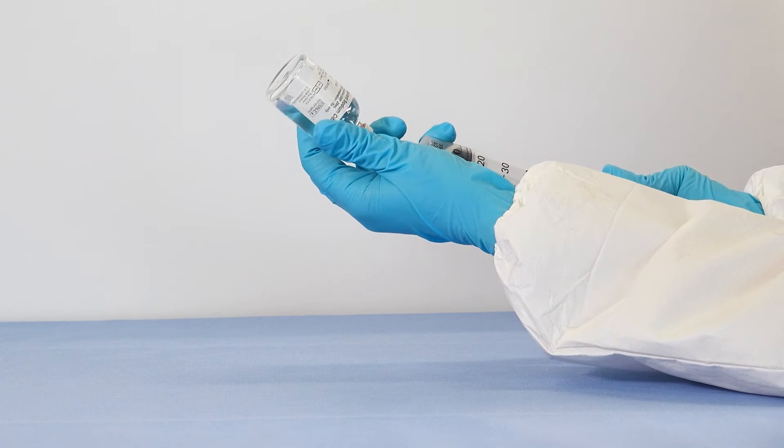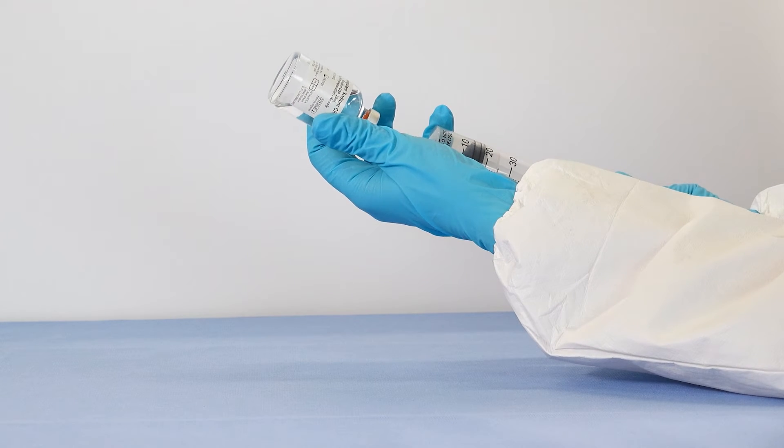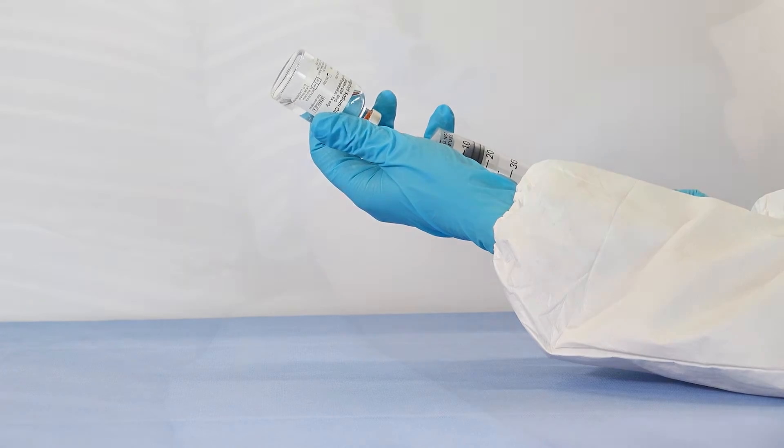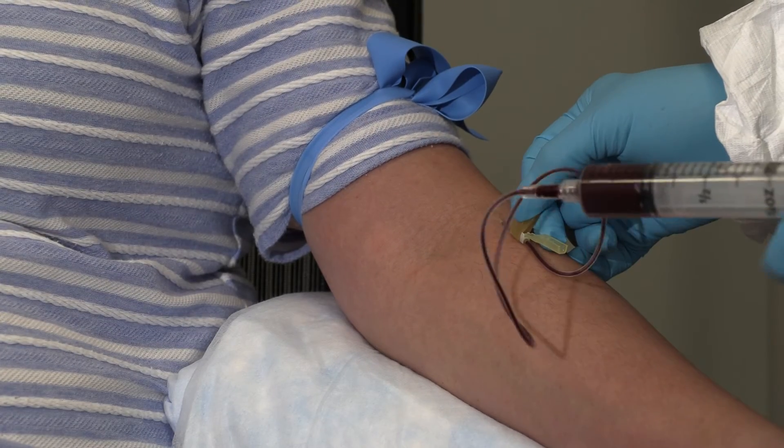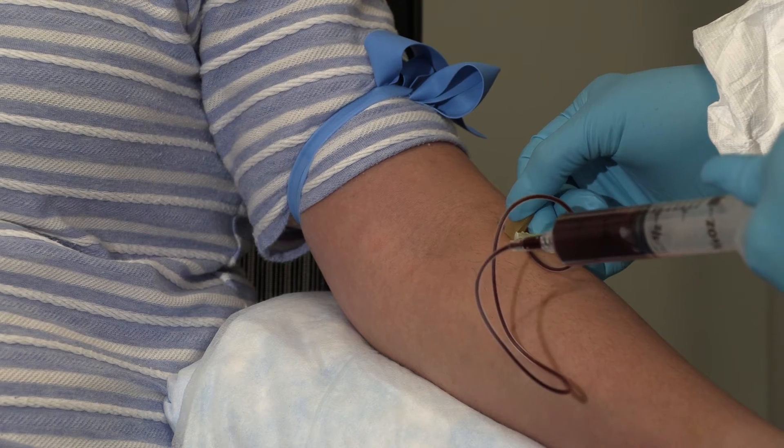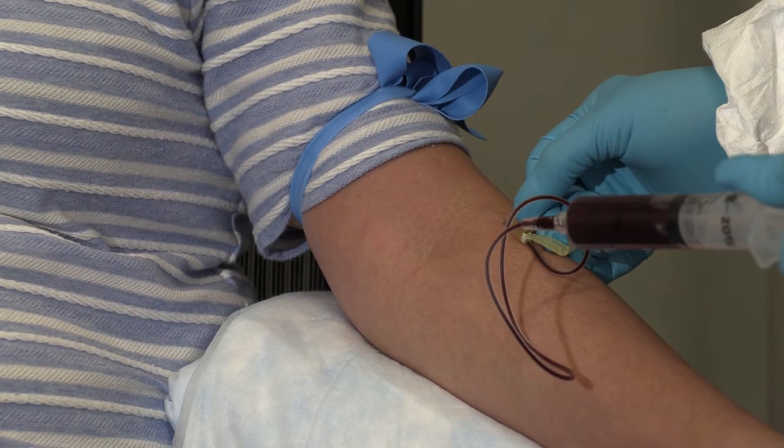Fill a 60 milliliter sterile syringe with 6 milliliters of citrate anticoagulant. Then draw 54 milliliters of blood from the patient, filling the syringe to 60 milliliters.